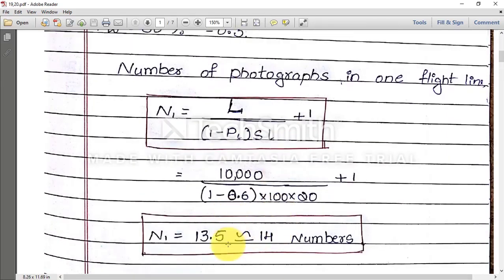See here, you should not convert to 13, round off to 13. It should be 13.5 means if it is also 14. Why? Because here, number of photographs if you reduce, what happens? Area will be missed, some area will be missed.